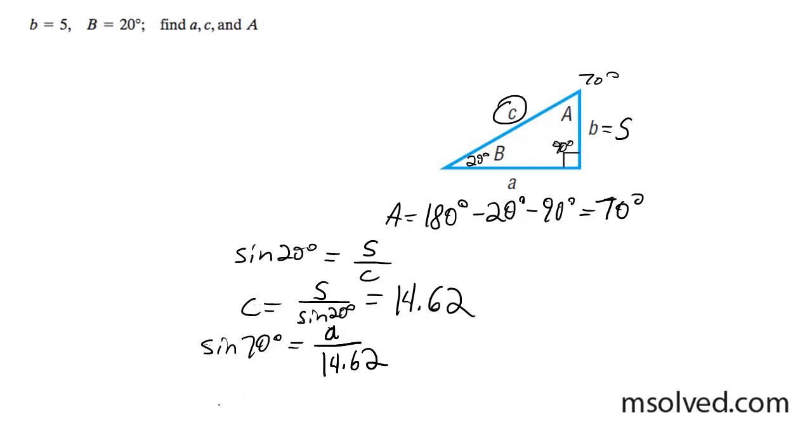When I multiply those, I get a is equal to sine of 70 degrees times 14.62, which gets me 13.74.